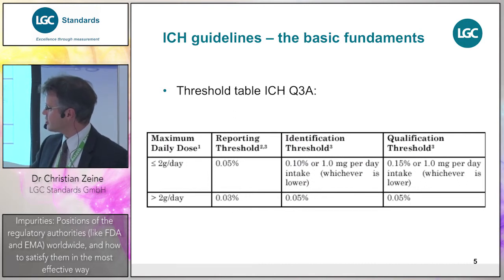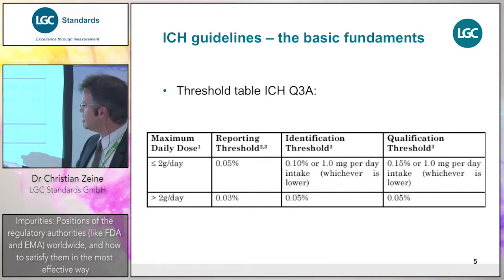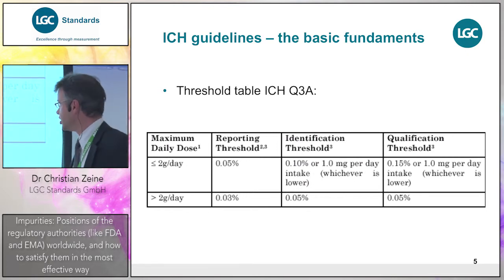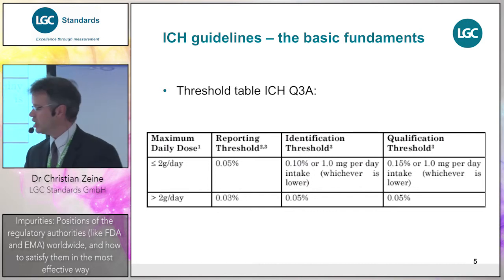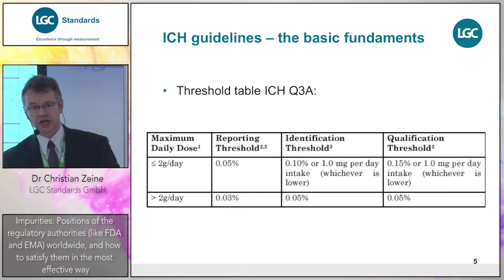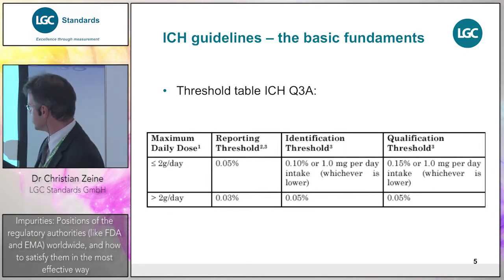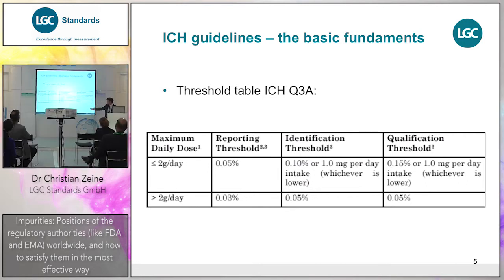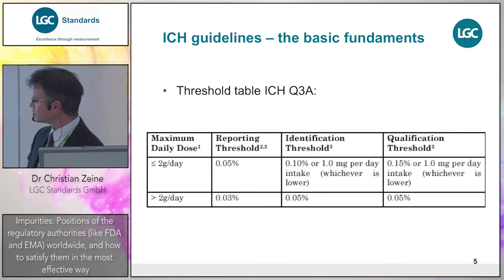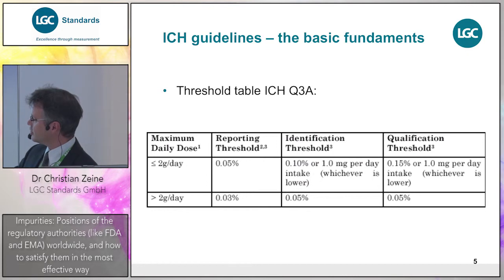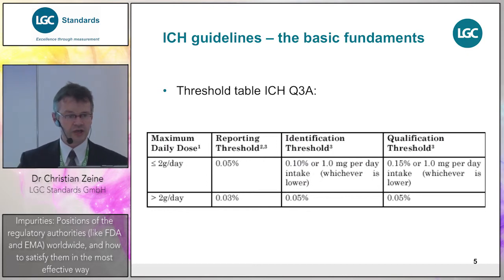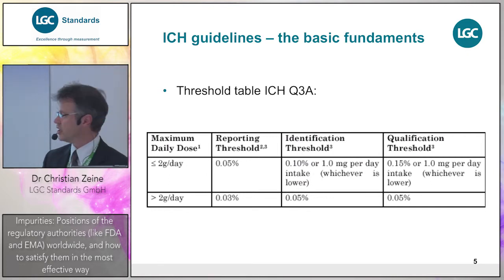The threshold table from ICH for impurities: when you have a drug substance administered not more than two grams a day, you must report every impurity above the reporting threshold, identify every impurity above 0.10%, and qualify every impurity above 0.15%. Qualification means showing that the impurity is not doing any harm to the patient during the duration of use. When a drug substance is administered more than two grams a day, lower thresholds apply. We will see these reporting thresholds adopted in the EP monographs.